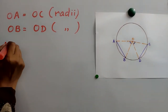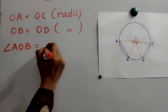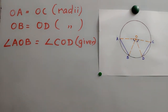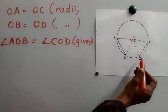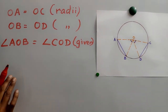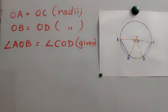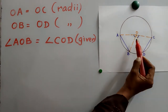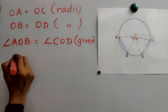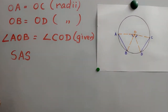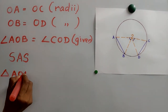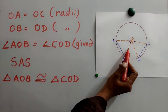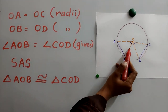Angle AOB is equal to angle COD — this is given. OA equals OC, and OB equals OD — these are radii of the same circle. So we have two sides and the included angle equal. This is SAS congruence. Therefore, triangle AOB is congruent to triangle COD.